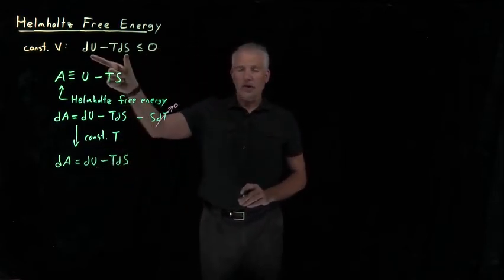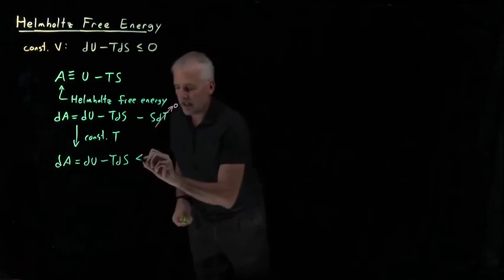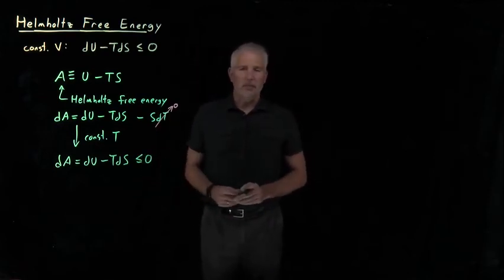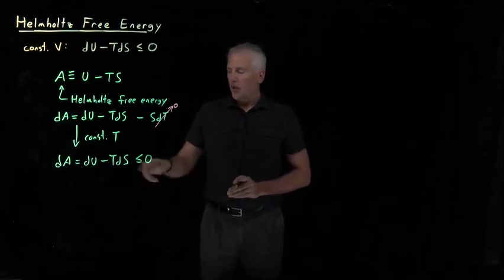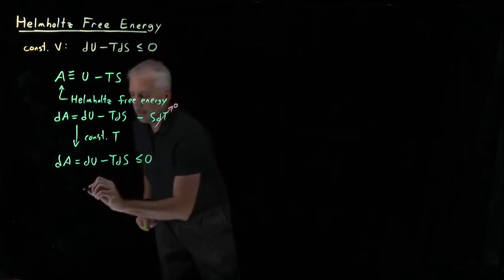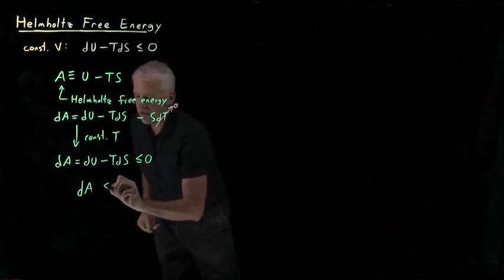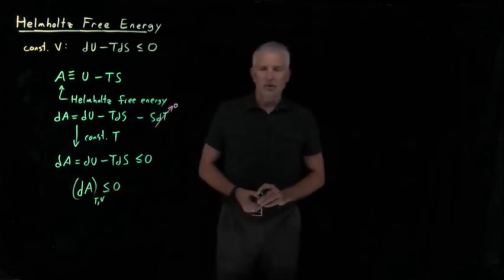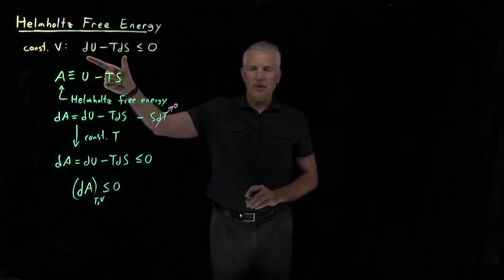dU minus TdS is exactly the quantity we know that must be negative or equal to zero for a process that's actually going to happen, for a process that's spontaneous or in equilibrium. So we've learned that dA must be less than or equal to zero if we're doing the process at constant temperature and volume.